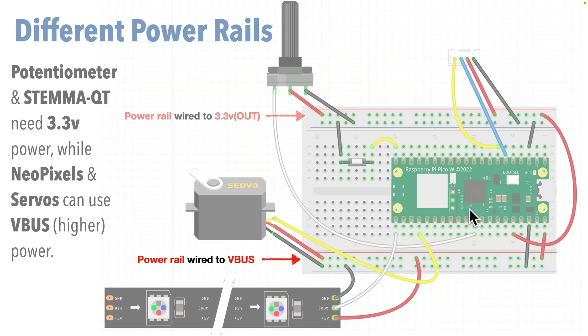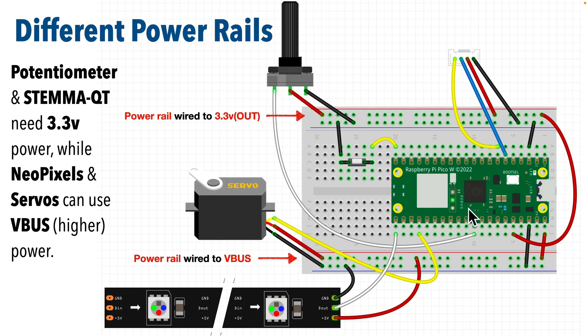Here's a more complex example of using the rails. We've got five components hooked up here: a servo, a NeoPixel strip, a potentiometer knob, a button, and a Stema QT connection for I squared C peripherals. In this setup I've got the two power rails connected to two different power sources. This bottom rail is connected to VBUS power since the servo motor and the NeoPixel can handle the greater power of the VBUS pin, but up top I've wired this power rail to the lower power 3.3V out pin on the Pico. That's because the potentiometer and the Stema QT port only want 3.3V power.